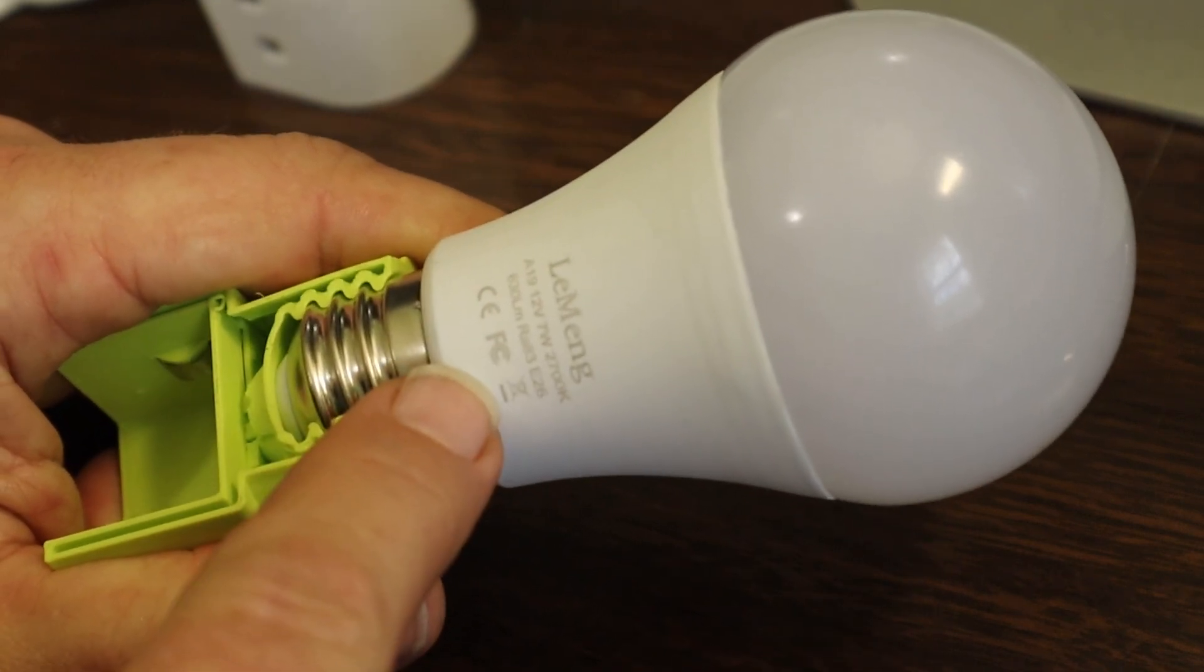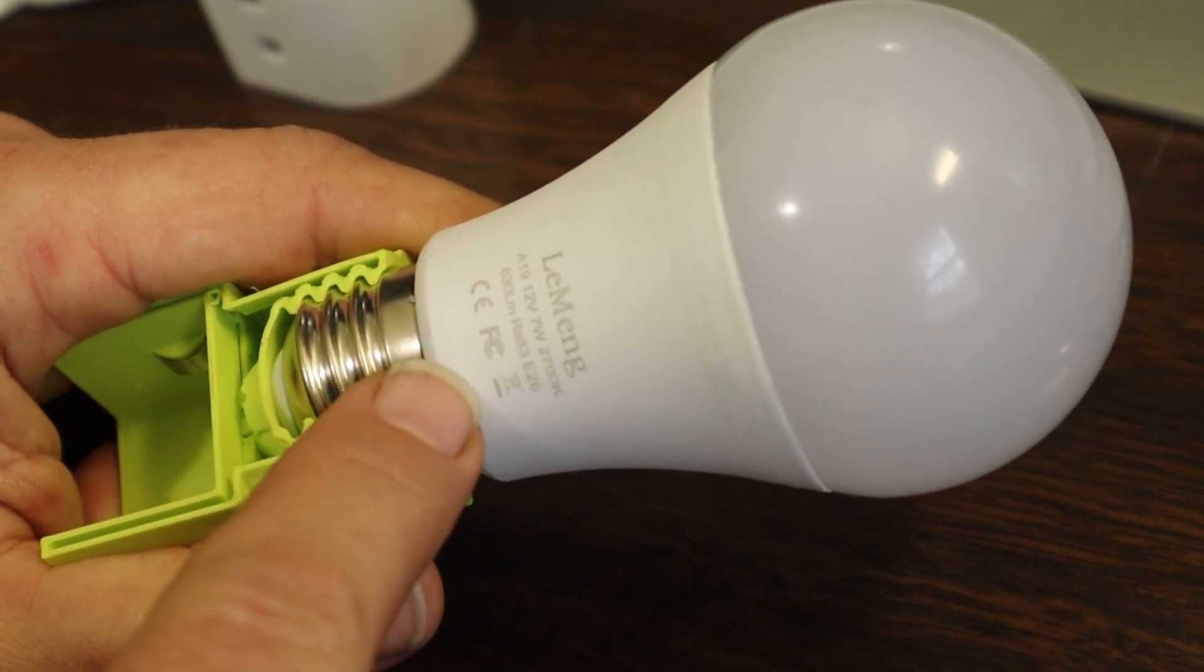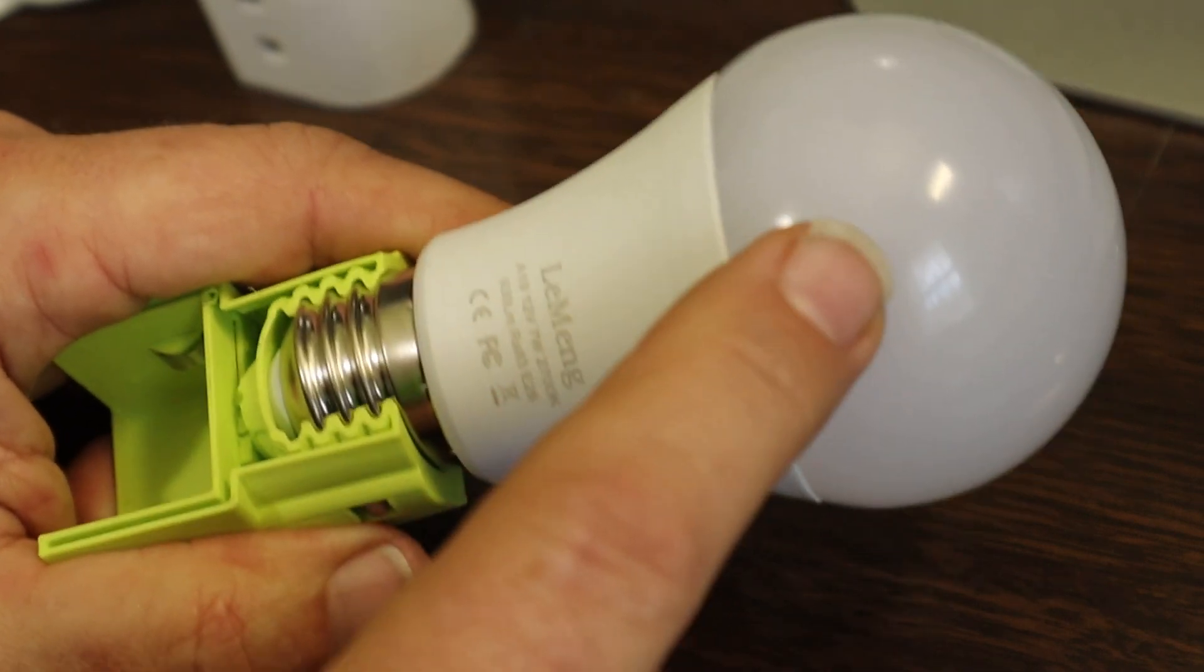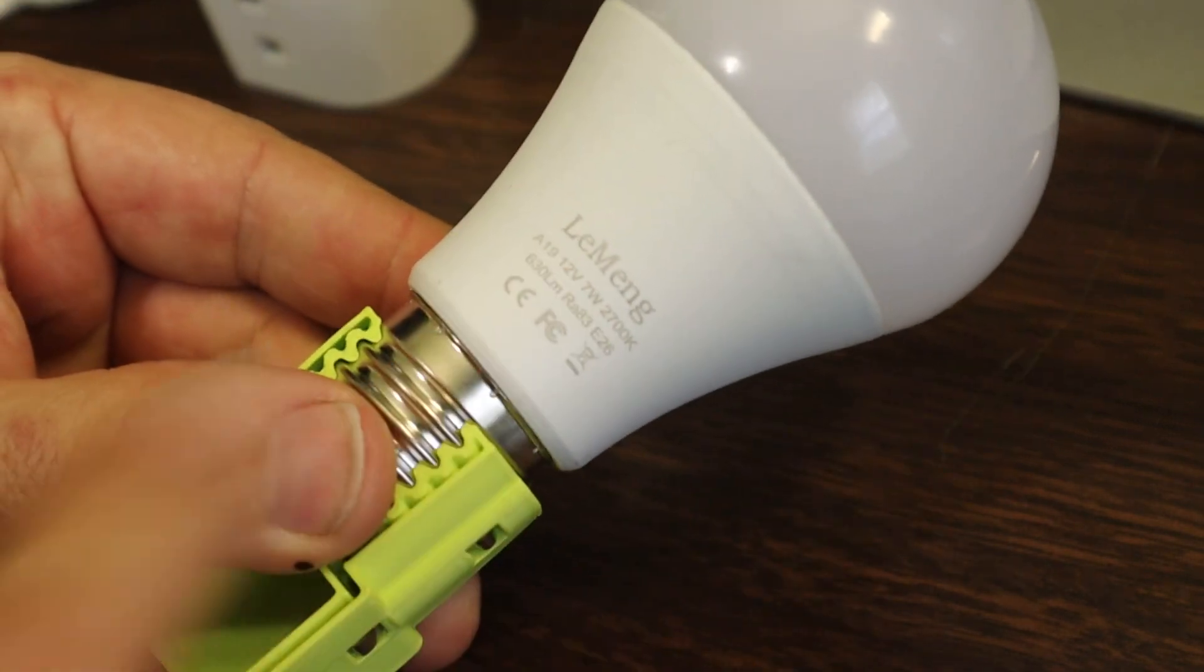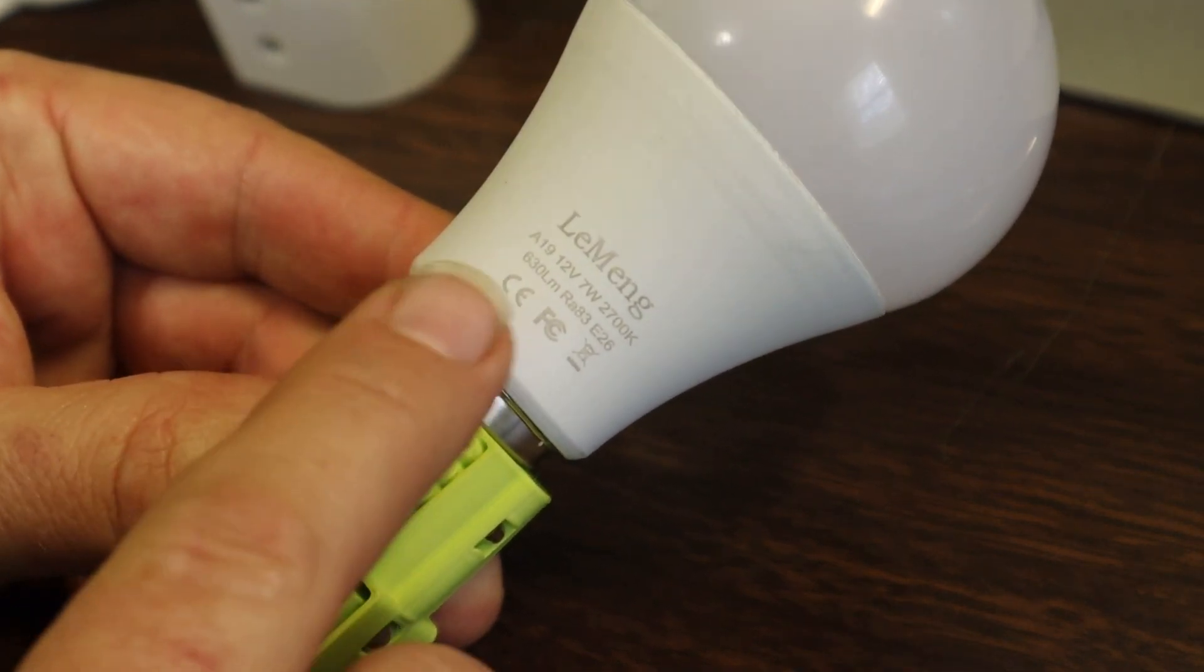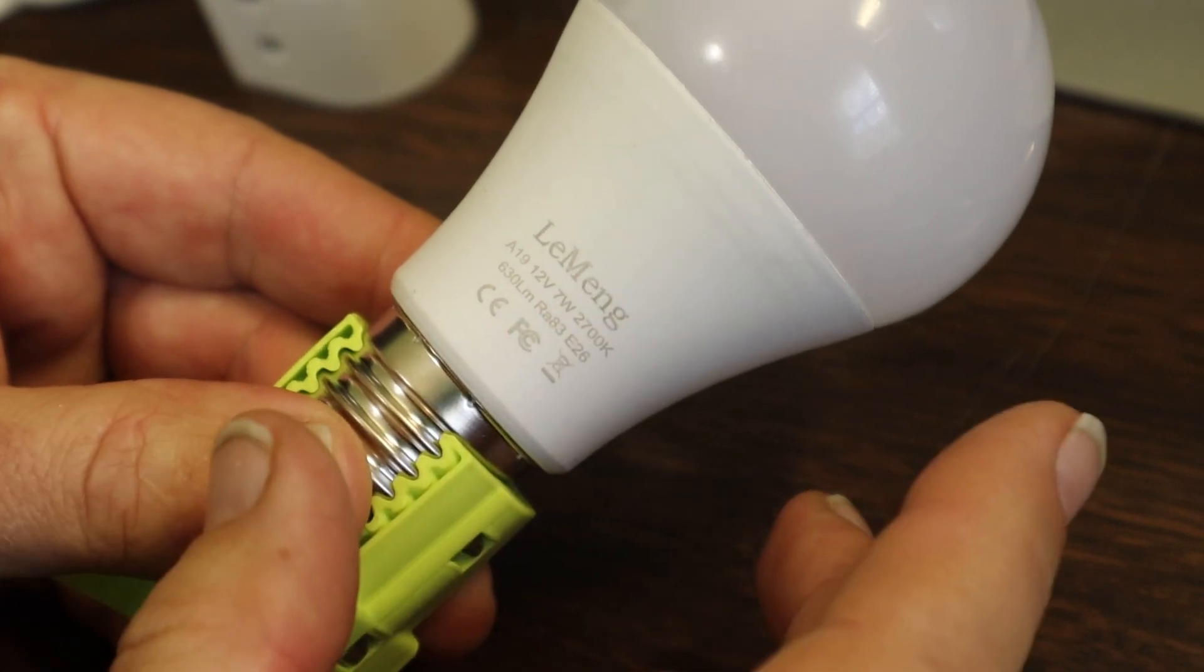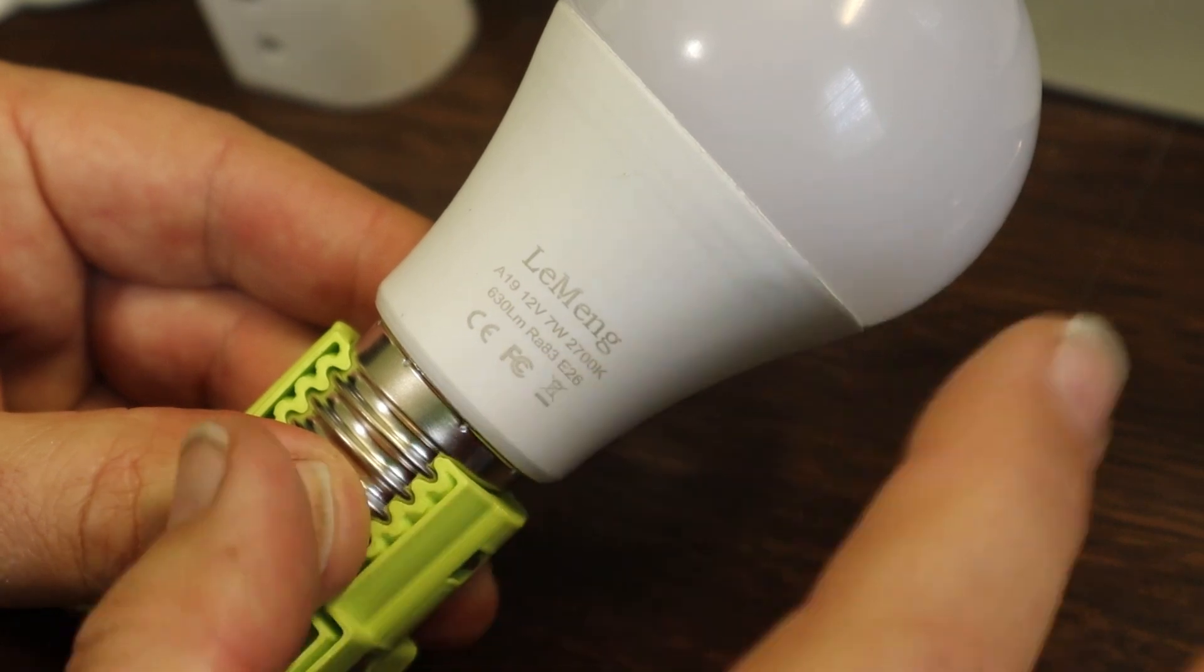Most 12 volt LED bulbs will run fine off the Ryobi 18 volt pack, but some of them are better designed than others. What actual electronics are on the inside and all. This is the brand that I found that I've really liked the most. It's LeMang. This is marked as a 12 volt, seven watt, 2700 Kelvin color temperature. So it's a warm color, which I really like, you know, camping emergency preparedness. That warmer color is really nice.